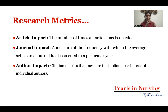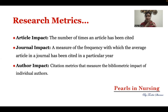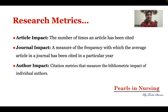Journal impact is also known as the impact factor of the journal. It refers to the frequency with which the average article in a journal has been cited in a particular year. If a journal is getting many citations in a given year, it means it has a good impact factor, and you can consider publishing your article there. The third metric is author impact, which looks at the quality or impact of the researchers.